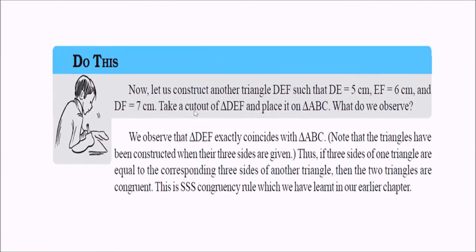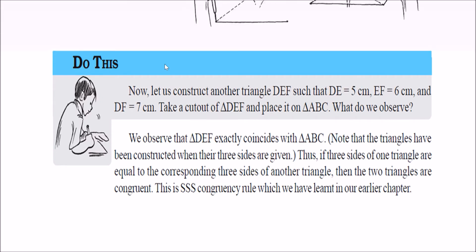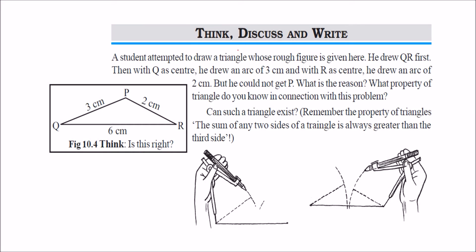If three sides are given, you can make a triangle this way. Now, somebody is trying to make a triangle with lengths 6, 2, and 3. They made a line of 6, but when trying to cut arcs of 3 and 2, these arcs are not intersecting anywhere. Why? Remember the property: the sum of two sides of a triangle must always be greater than the third side. Since 3 + 2 = 5, which is less than 6, the triangle is not possible.